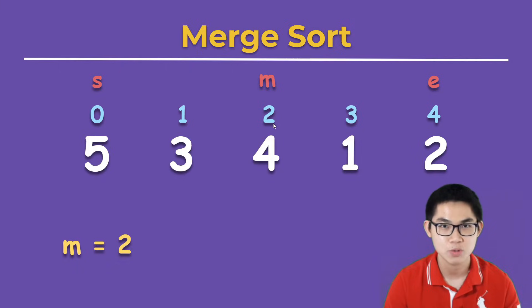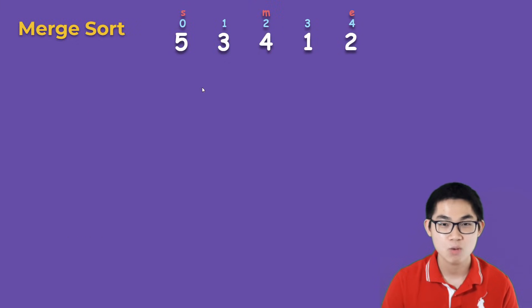Here is our array. Now we split the array into two parts, and the first part is going to be from start to the mid, so we get 5, 3, 4.